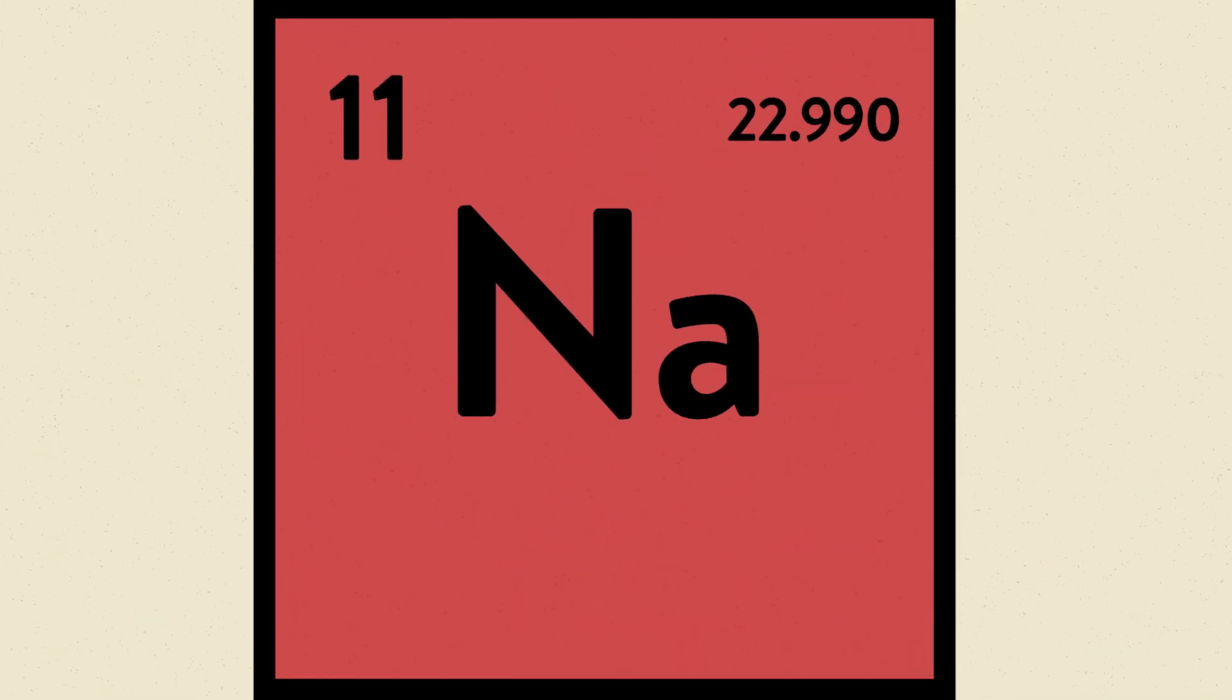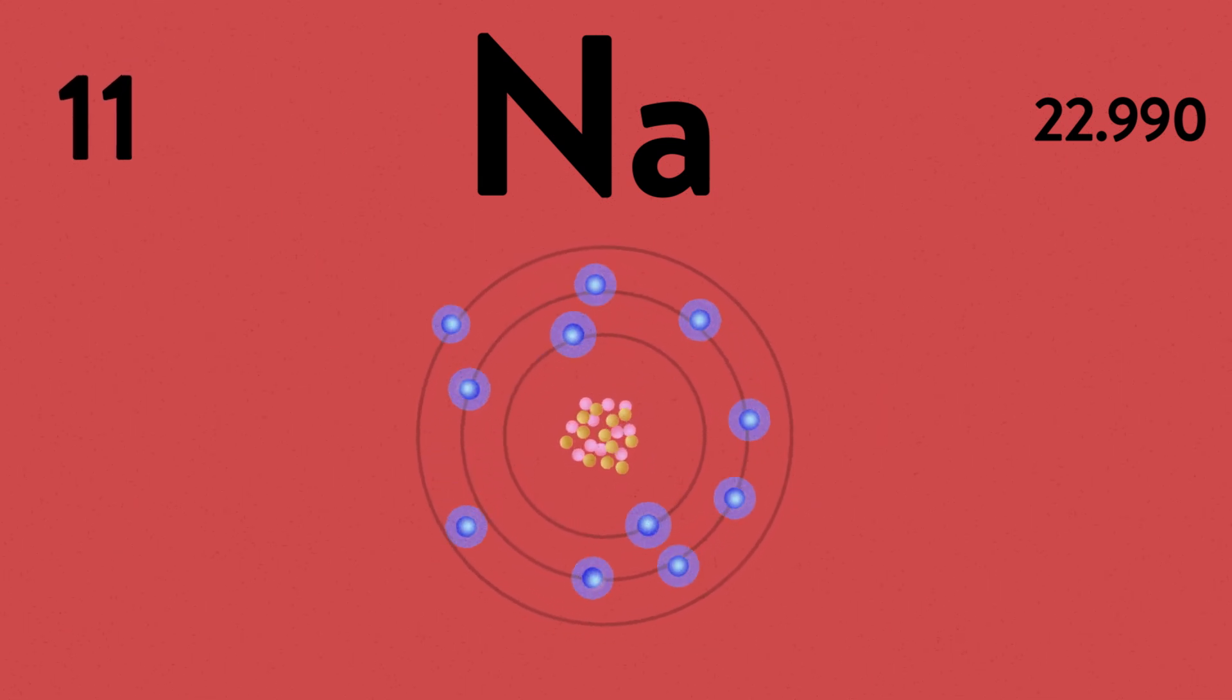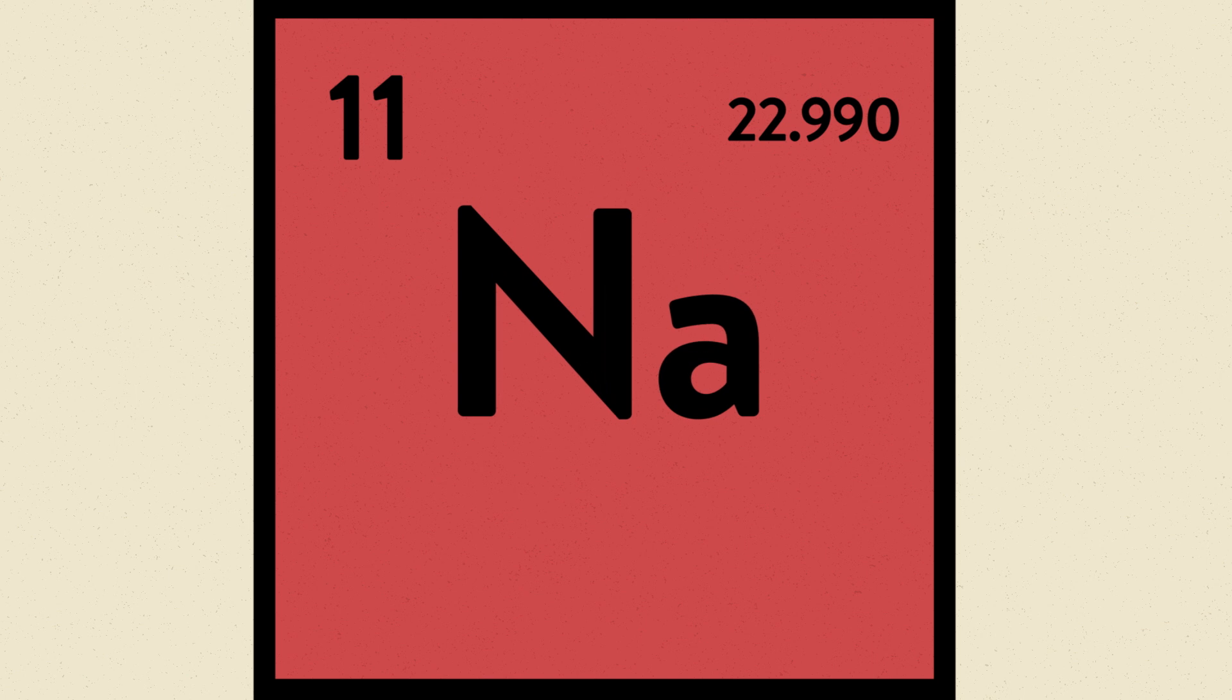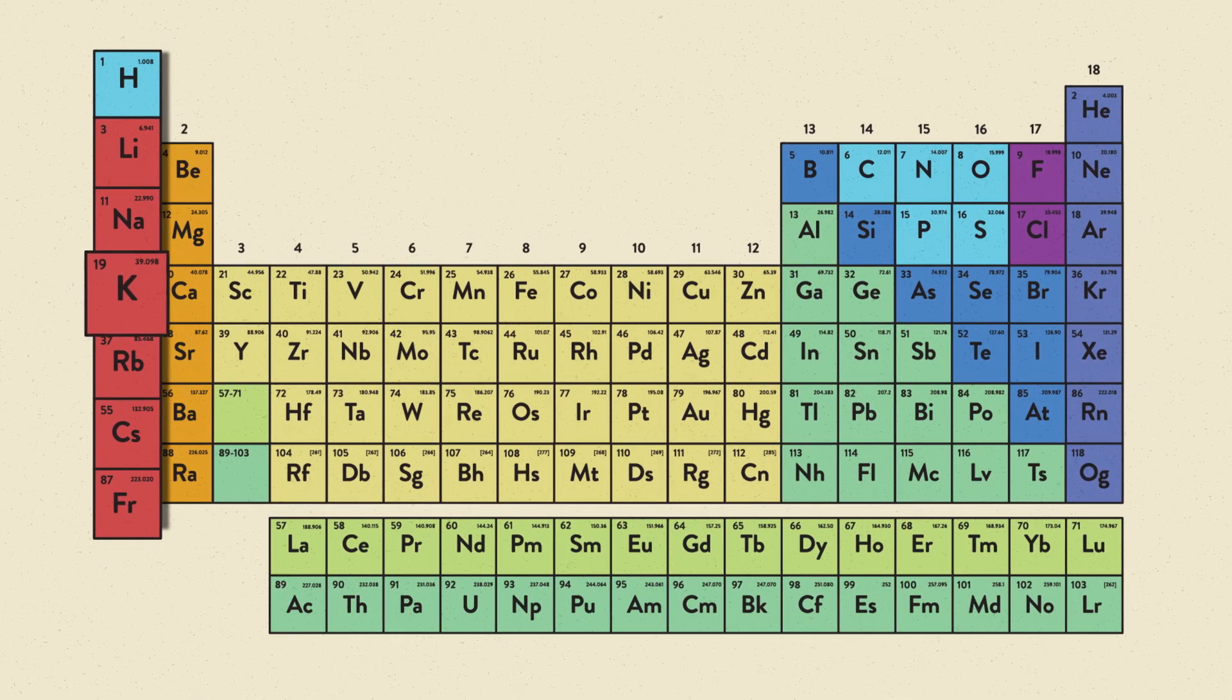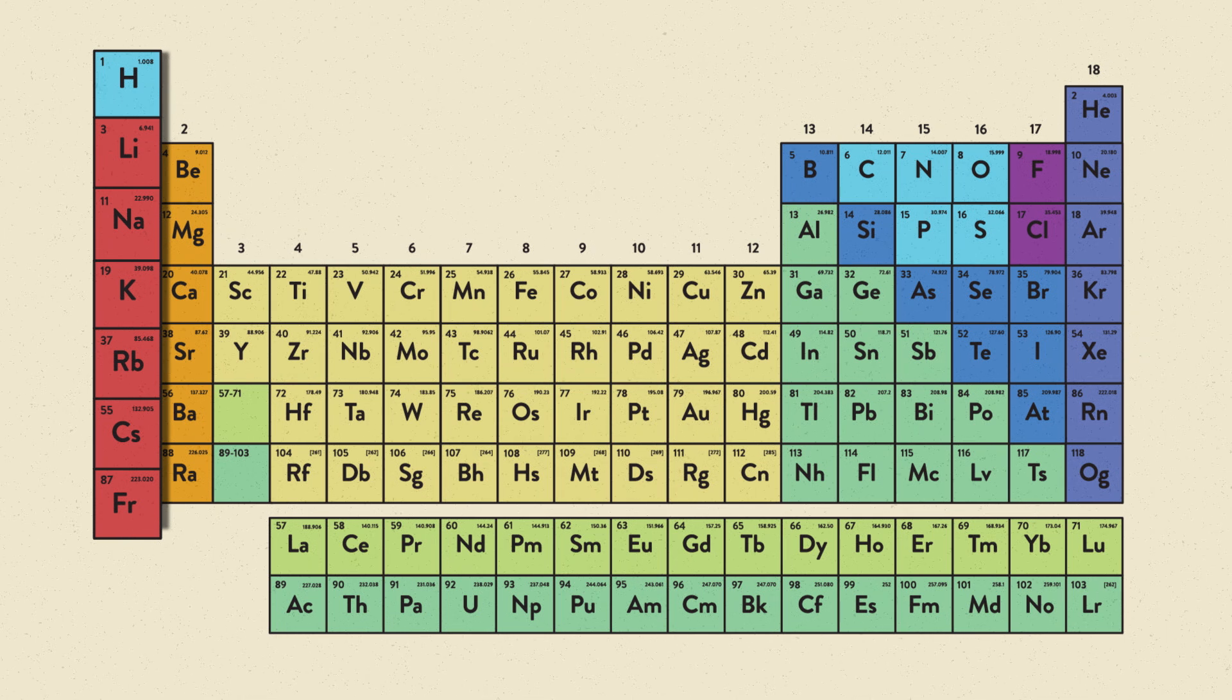Sodium has 3 electron shells. Its atomic number is 11, so a neutral atom has 11 electrons. As you continue down the group, the atomic radius continues to increase due to the increase in electron shells.